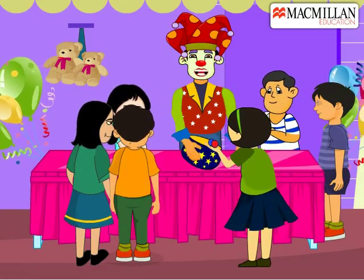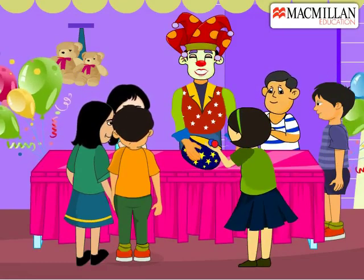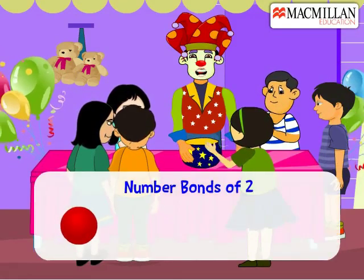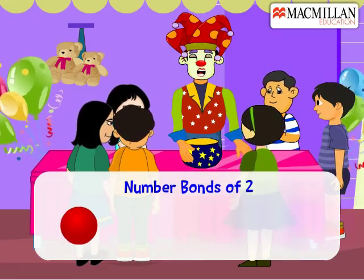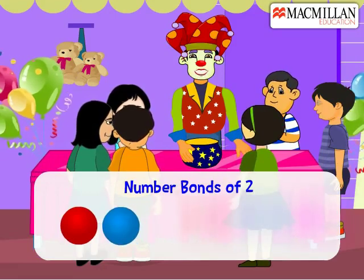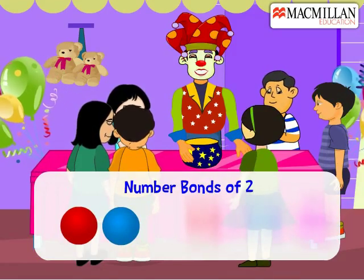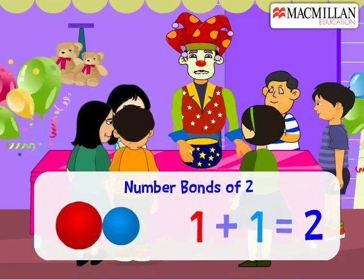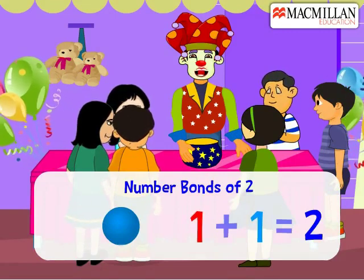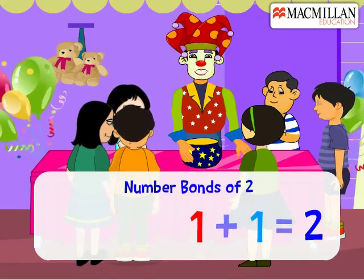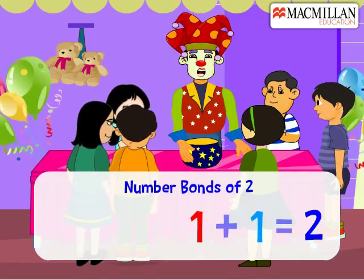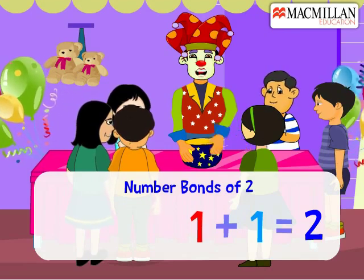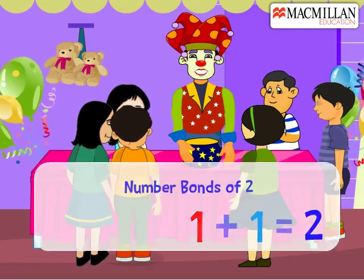Let's see what you get. Now we have one red ball and one blue ball. That means we can add one red ball with one blue ball. That is one plus one, which gives us two balls.